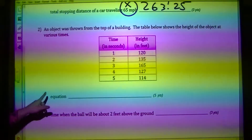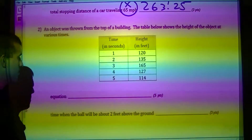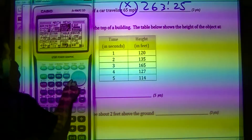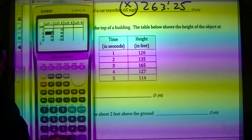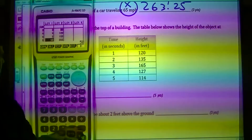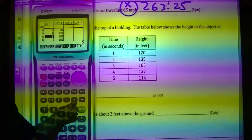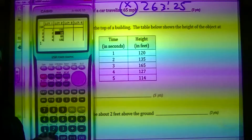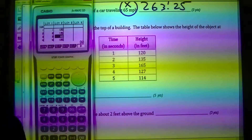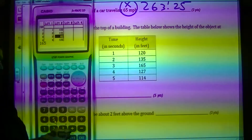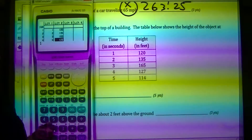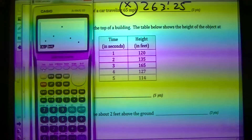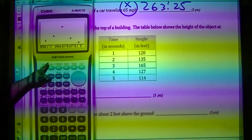Question number two: an object thrown off the top of a building — the table shows the height. I'm going to go to menu, back to stat, and type in the X values: 1, 2, 3, 4, and 5, along with the Y values: 120, 135, 165, 127, and 114. When I graph it, it sort of curves, so that's going to be a quadratic fit.